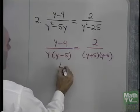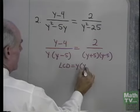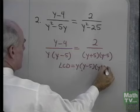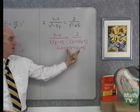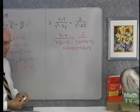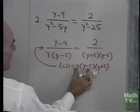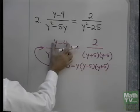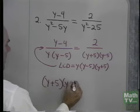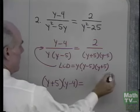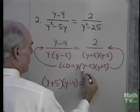So my least common denominator is y times y minus 5 times y plus 5. So I'm going to take that least common denominator and multiply this side of the equation by it. Then I'm going to take the least common denominator and multiply this side of the equation by it. When I multiply on the left side right here, y and y minus 5 will divide out. What will be left is y plus 5 times this numerator, y minus 4. When I take my least common denominator and multiply it times this side of the equation, y plus 5 and y minus 5 will divide out, and what will be left is y.